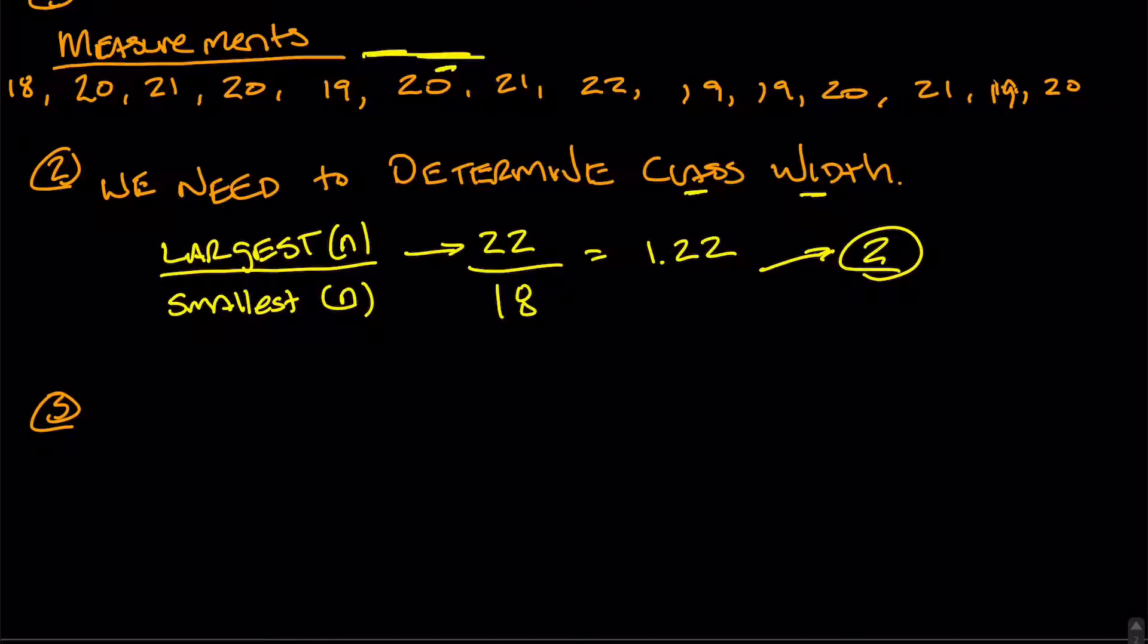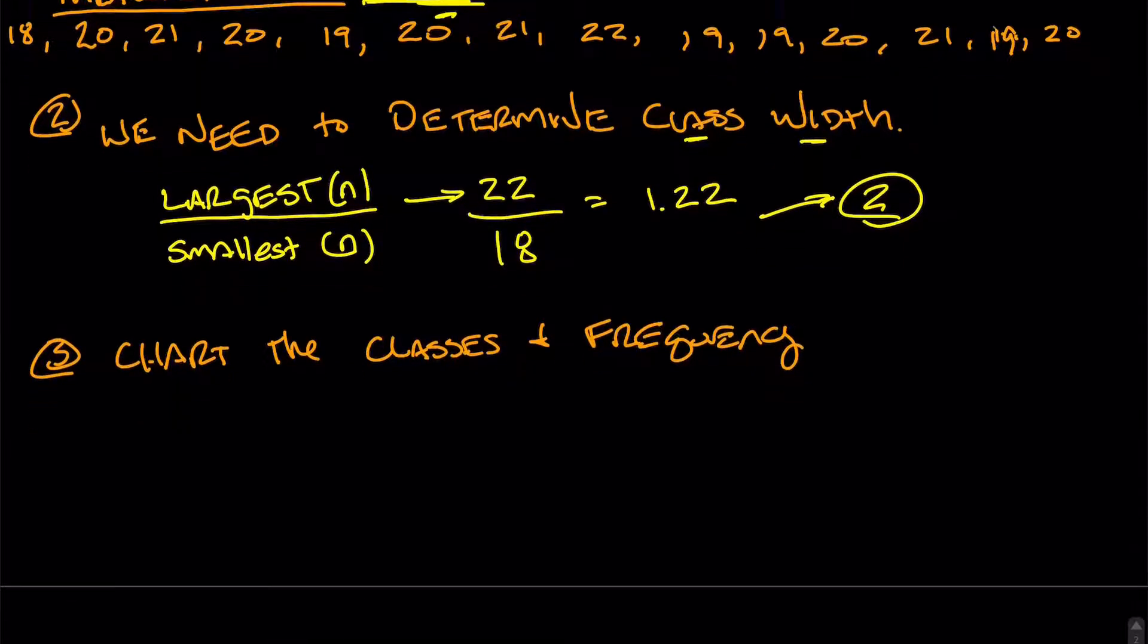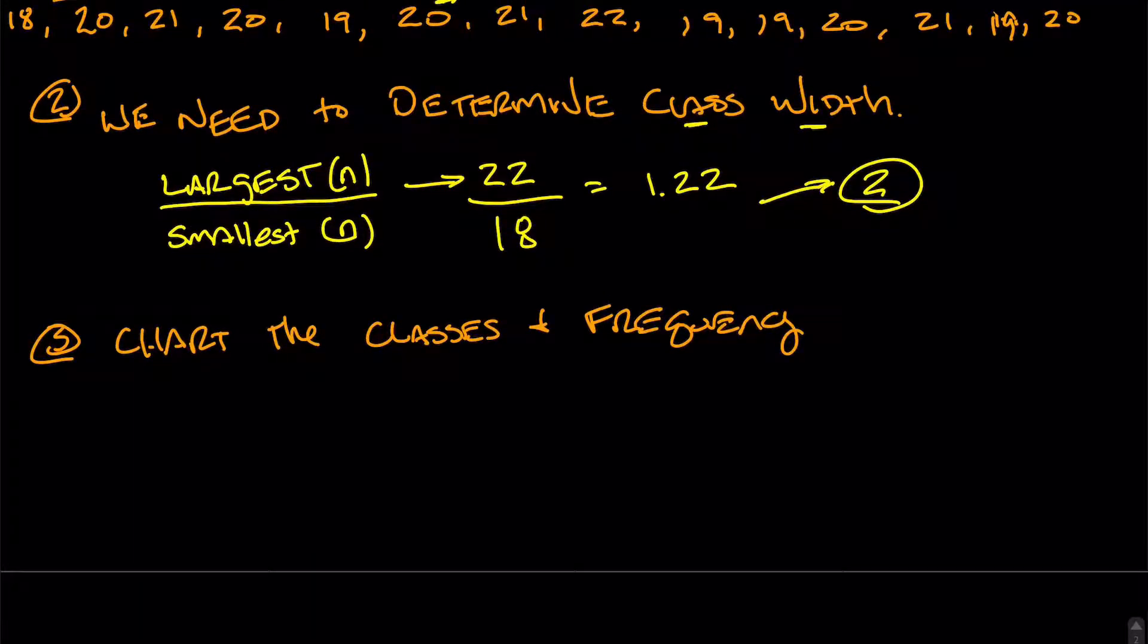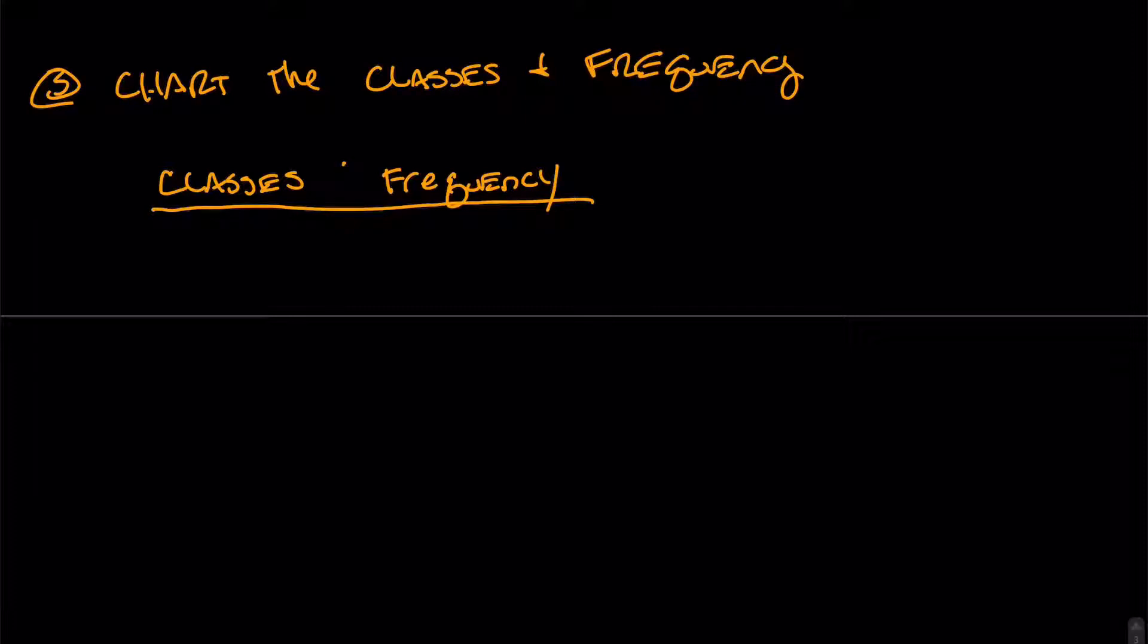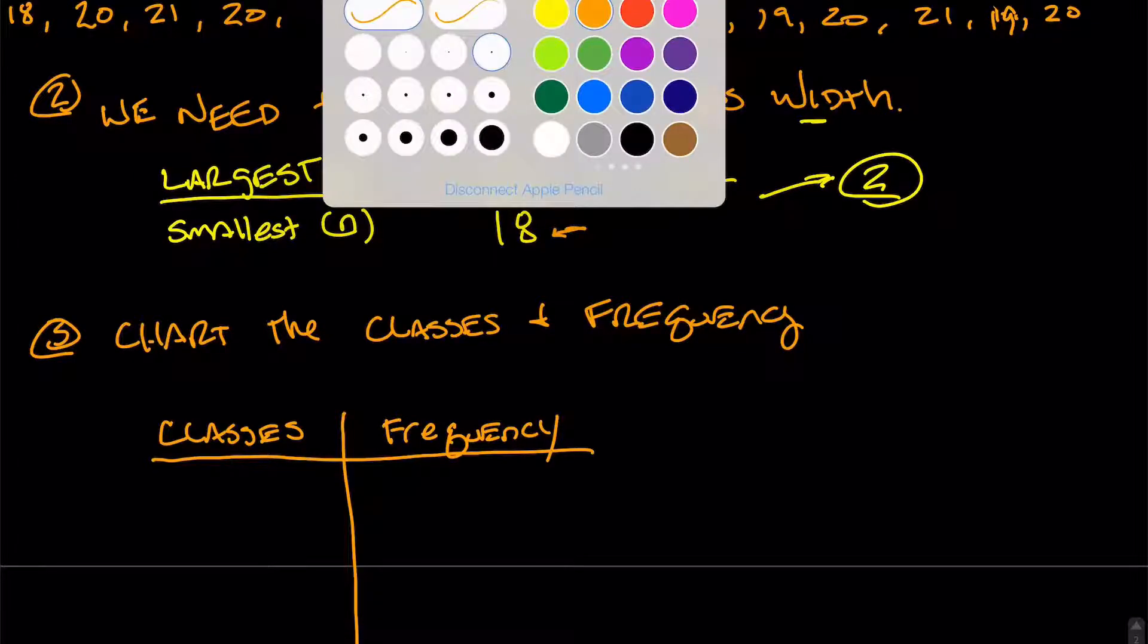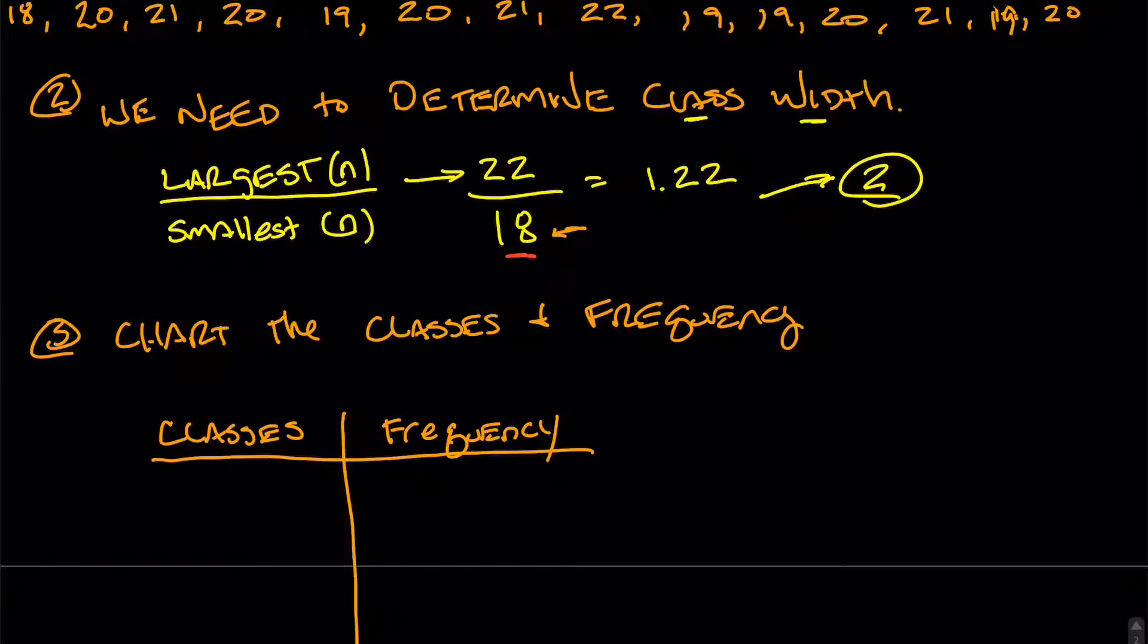So the third thing we need to do is to chart the classes and frequency. So that's what we're going to do now. So I'm going to scroll on down here and I'm going to write classes and frequency, try to keep a straight line here. All right. So let's look at our classes. And the way you do that is you look at the lowest number. So we said the lowest number was 18. So we start with the lowest number. I'm going to switch up colors here really quick so we can see the red. So we start with our lowest number, which is 18.